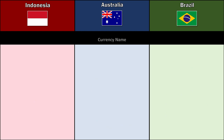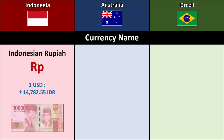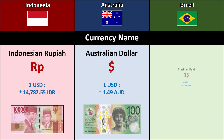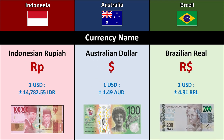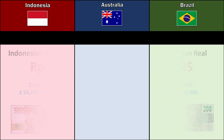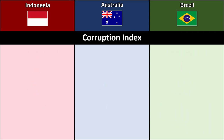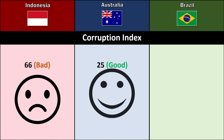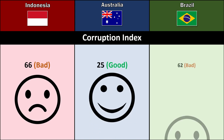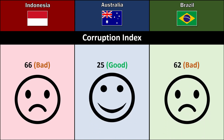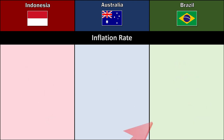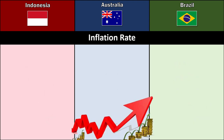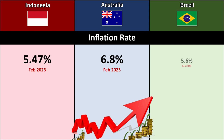Currency: Indonesian Rupiah, Australian Dollar, Brazilian Real. Corruption Index: Indonesia 66 (bad), Australia 25 (good), Brazil 62 (bad). Inflation Rate: Indonesia 5.47%, Australia 6.8%, Brazil 5.6%.